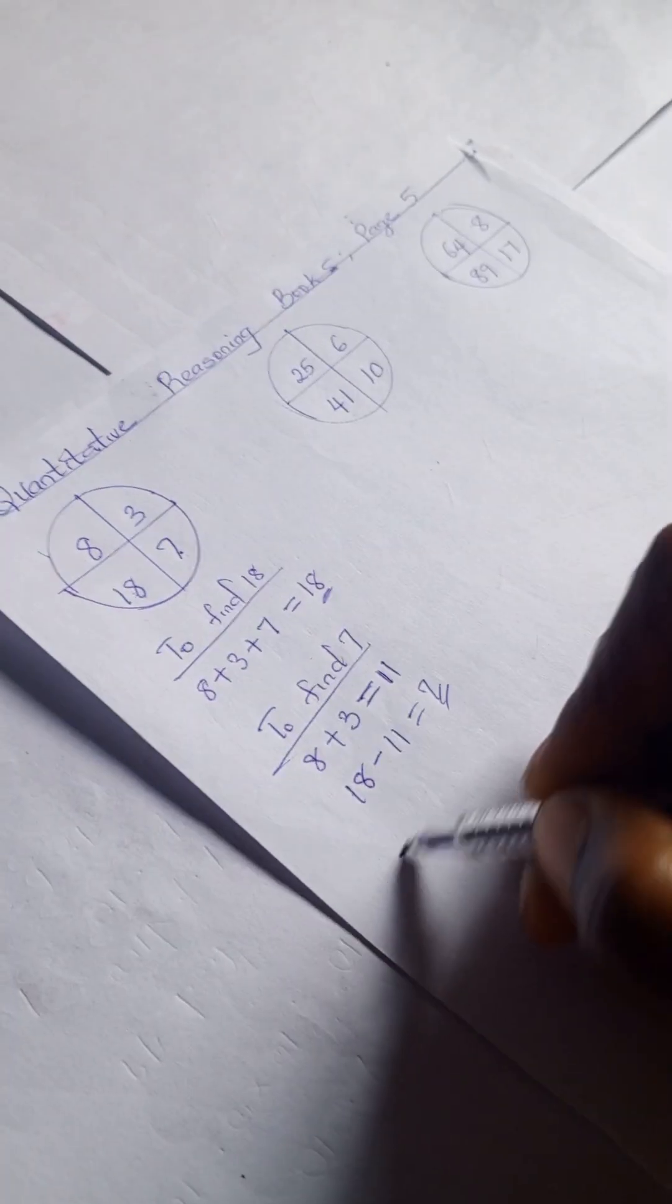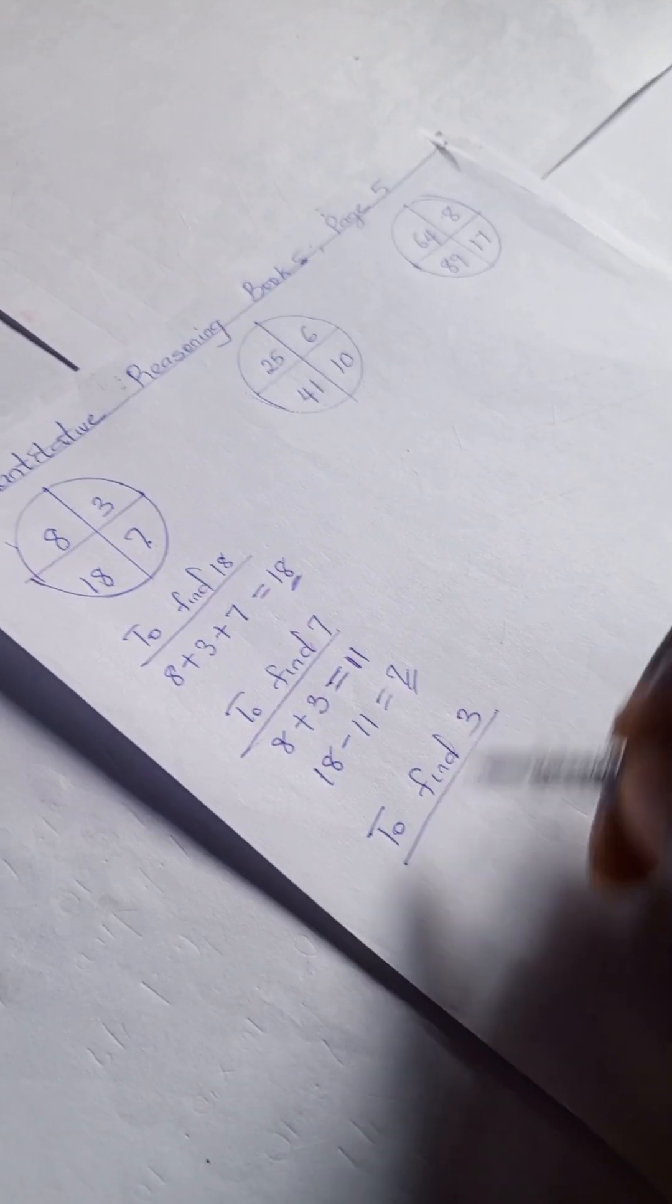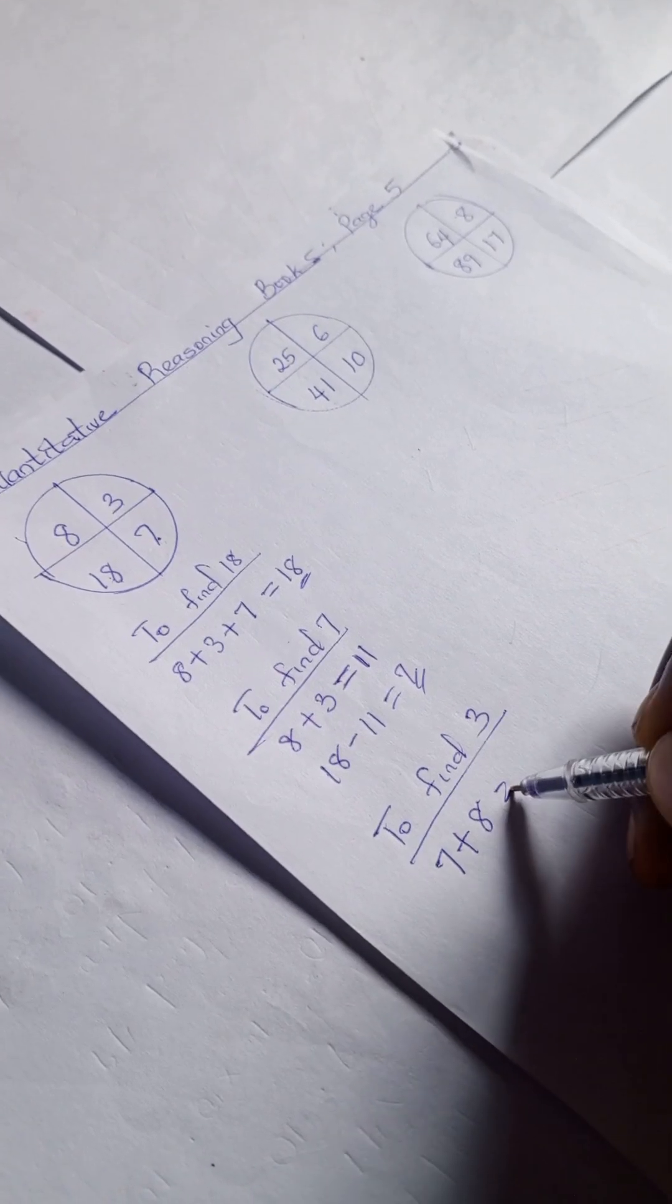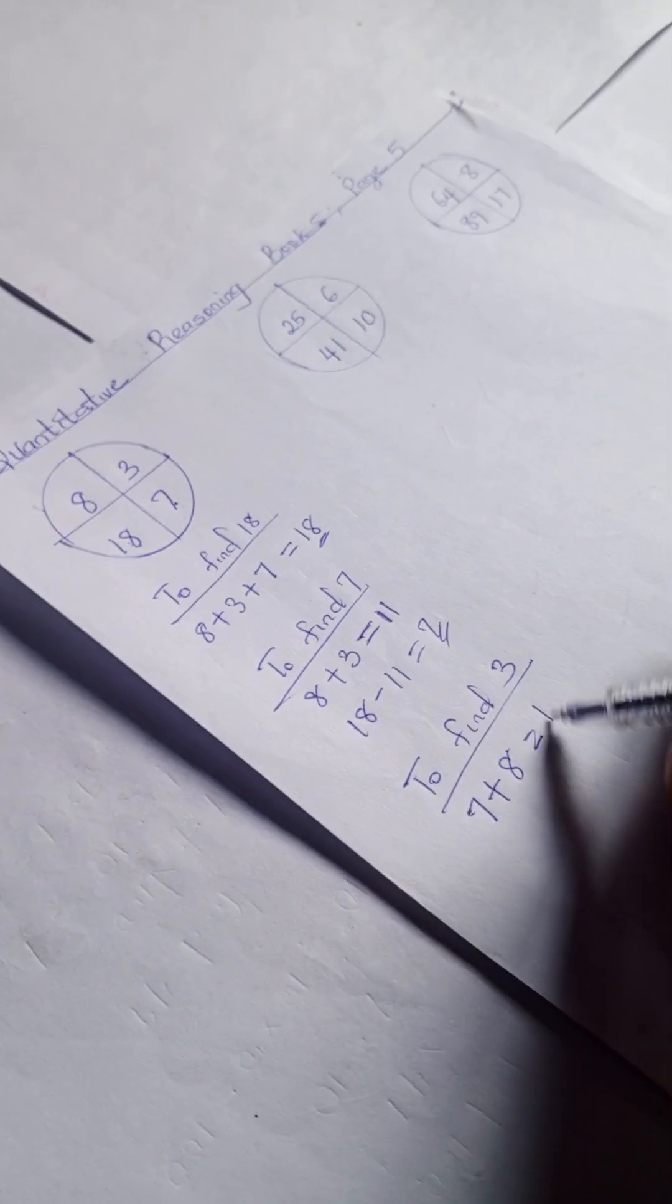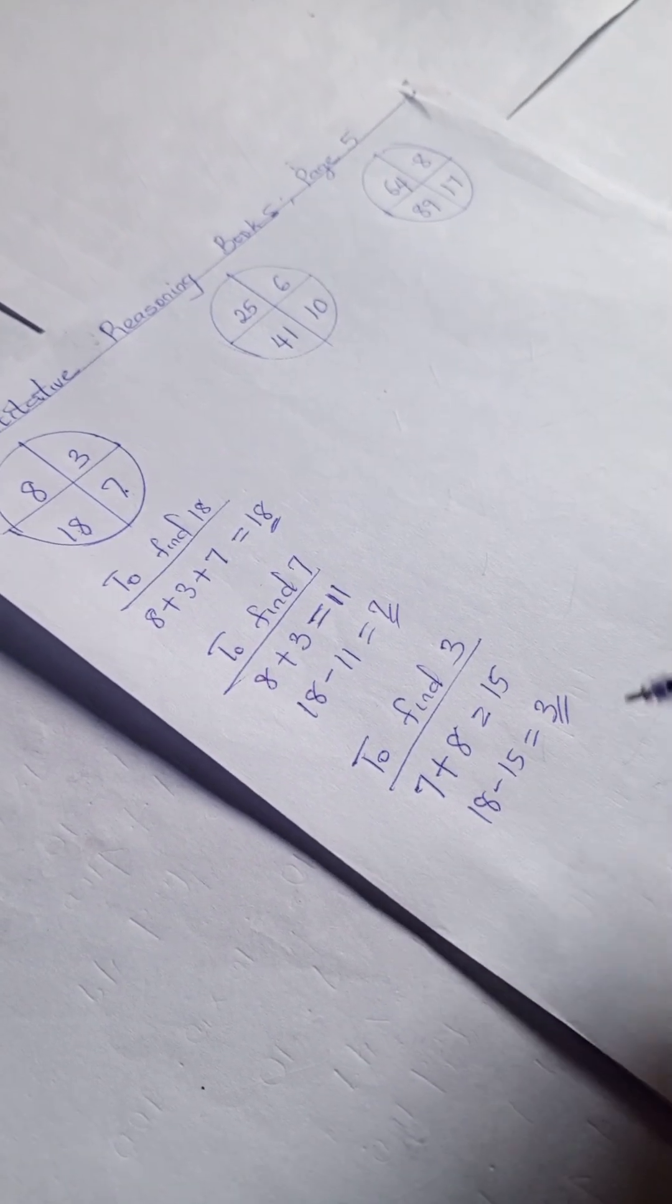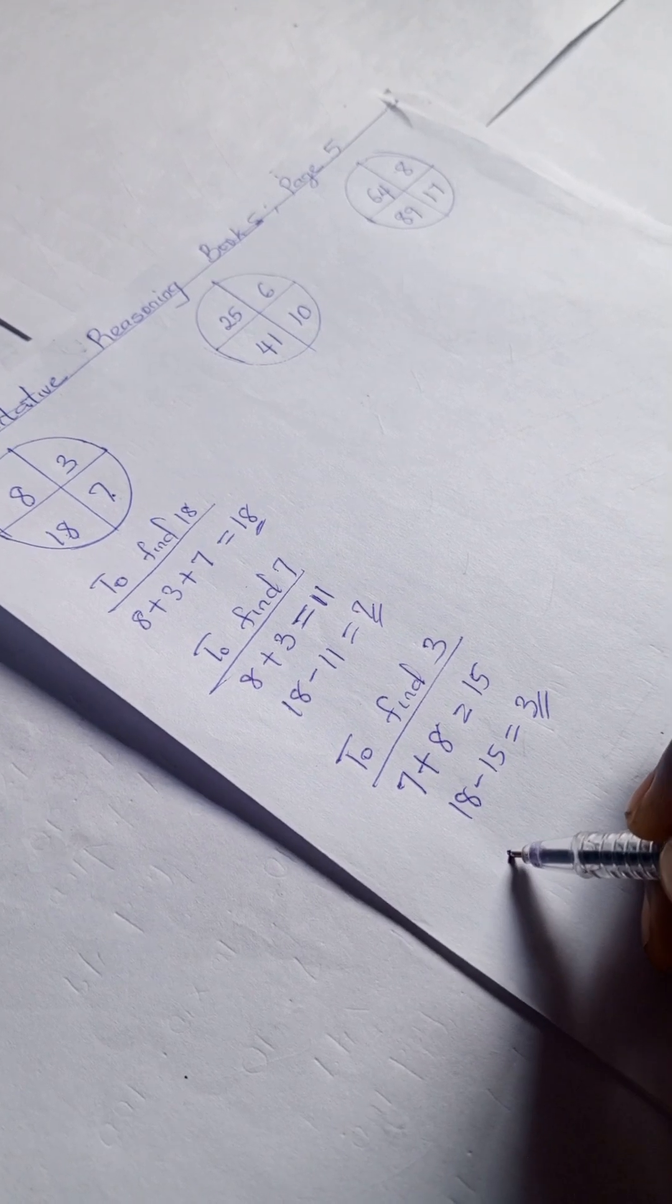We have 7 plus 8 equals 15, 18 minus 15 is 3. Don't forget to like and subscribe to this channel.